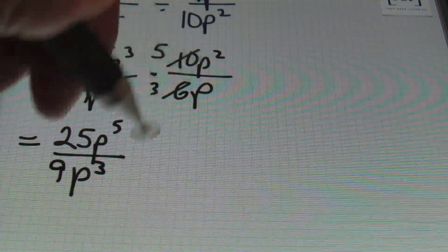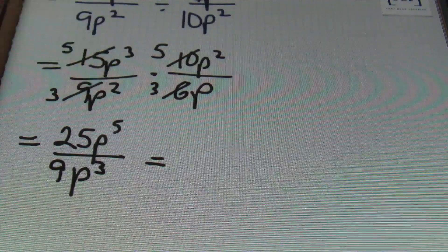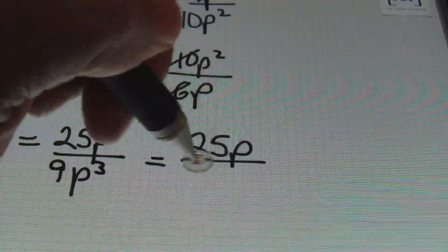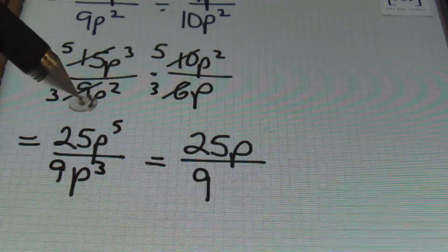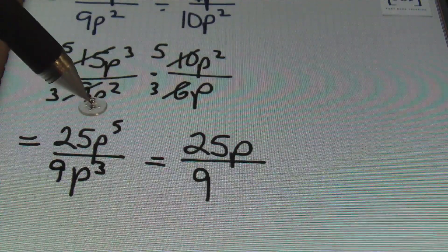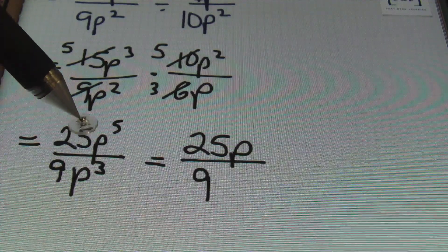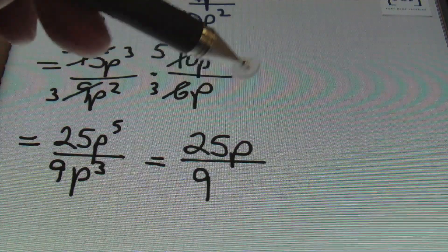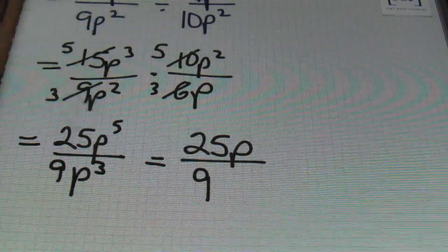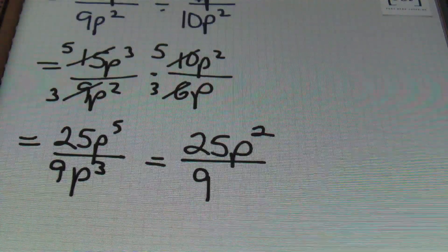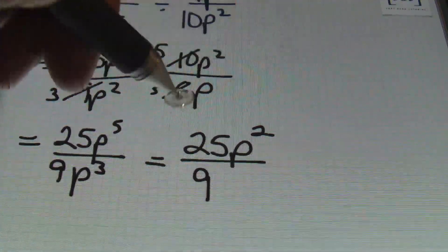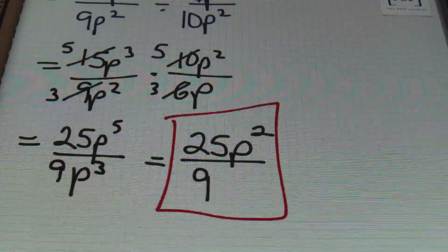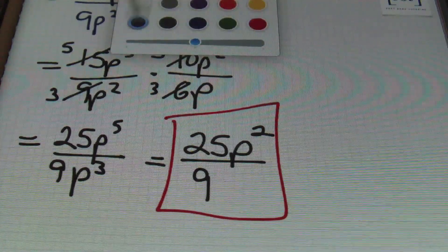Now I can leave my variable p in the numerator, because the variable will remain wherever the largest exponent is. All you have to do is subtract the exponents. p remains in the numerator because p is to the fifth power in the numerator whereas in the denominator it's just to the third power. To get the exponent on your variable p, you just simply subtract: 5 minus 3 leaves you with p squared. And that's the answer — 25p squared over 9.